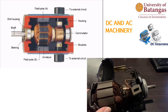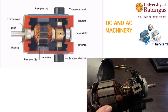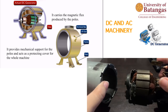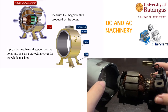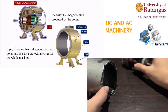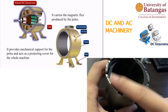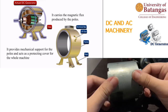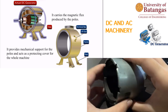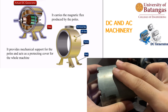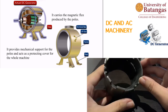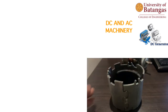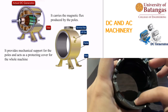The first part is the yoke. This example is a two-pole permanent magnet DC motor. The yoke provides housing for the dynamo, gives mechanical support for the poles, and acts as a protecting cover for the whole machine. It is made of ferromagnetic material — either iron or steel.